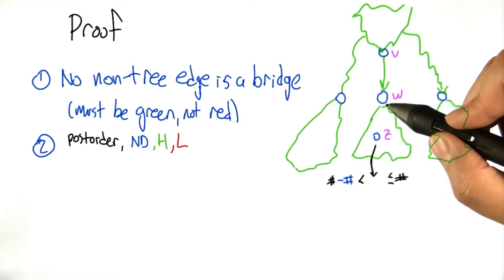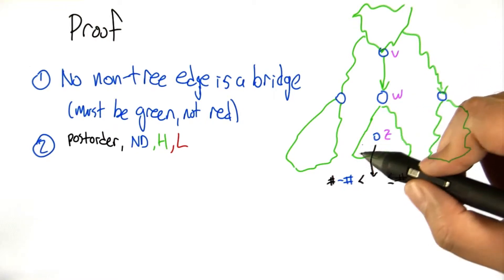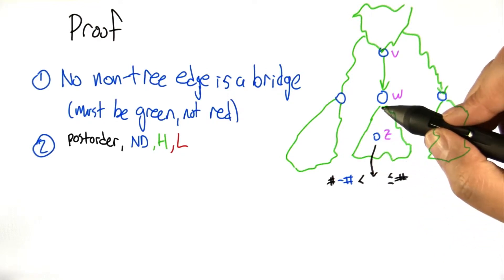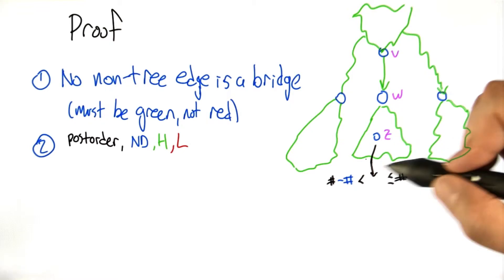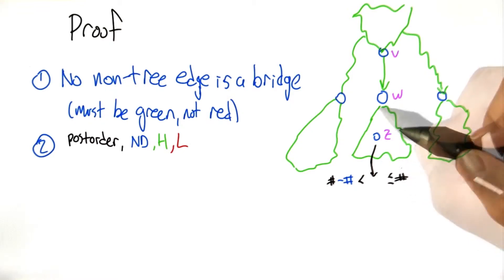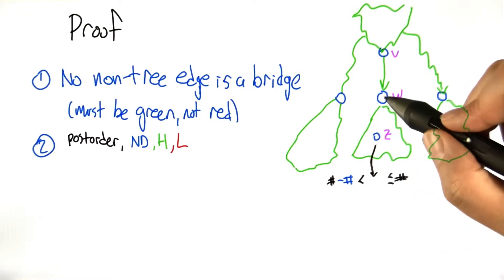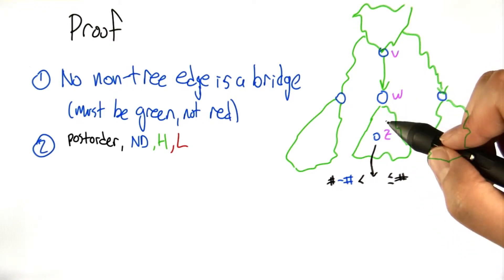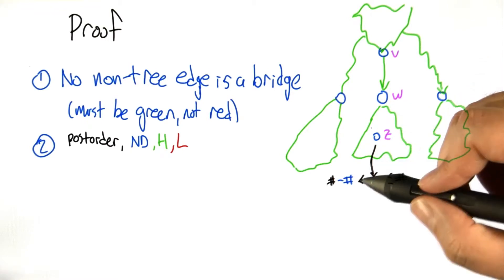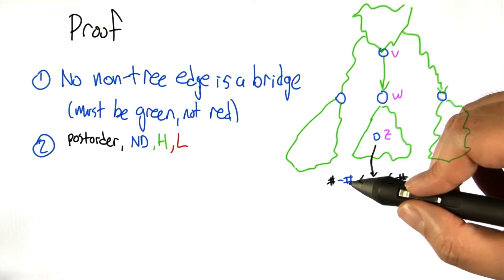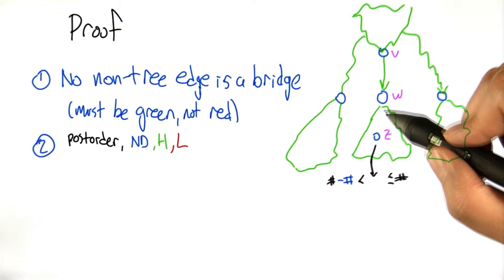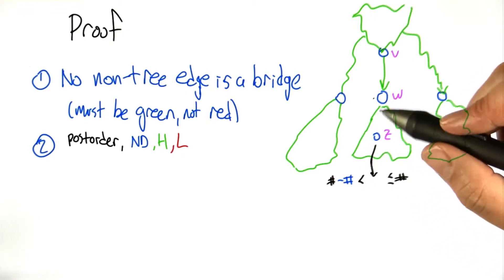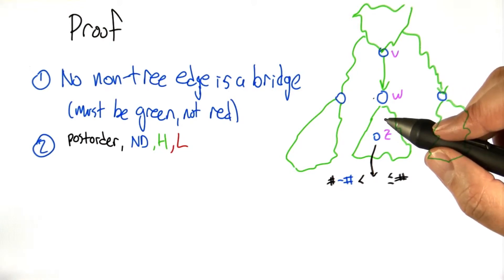So when we go to do the postordering at w, we go down here, we number somebody, then we number everybody, then we number w itself. The postorder number of everyone in here has to be less than the postorder value of w. But the total number of numbers in this set, they're all contiguous, they're all in order, and the total number of numbers in this set is the number of descendants. So postorder of w minus descendants is one smaller than the smallest number in this collection. That property is kind of obvious perhaps, but we're almost there.